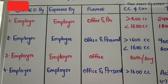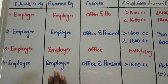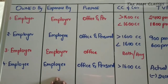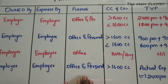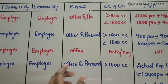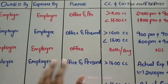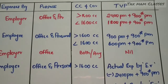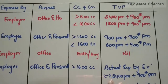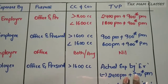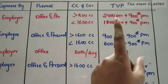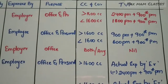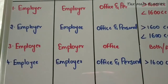Now let's see the provisions. The first column talks about who owns the motor car. The second column talks about whether expenses are met by the employer or employee. The third column talks about the purpose — whether it is used only for office, personal, or both. The fourth column talks about the CC of the engine, and the last column talks about the taxable value of perquisite, which I have abbreviated as TVP.